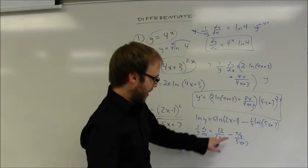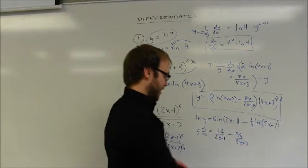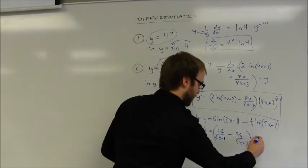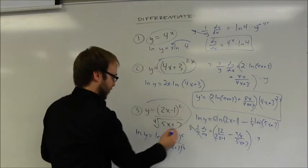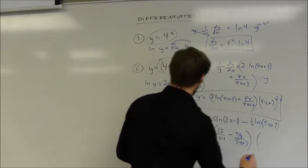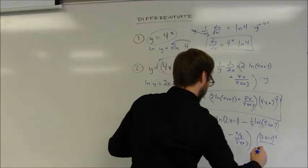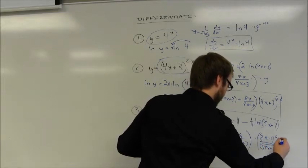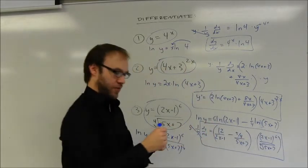You could also write that as 5 in the numerator over 4 times that entire denominator there. And to close this out, remember that both sides need to be multiplied by y just to get dy dx. In this case, y is equal to that original function. So I'm going to replace the y with the original function. And the original function is 2x minus 1 raised to the sixth power over the fourth root of 5x plus 7.